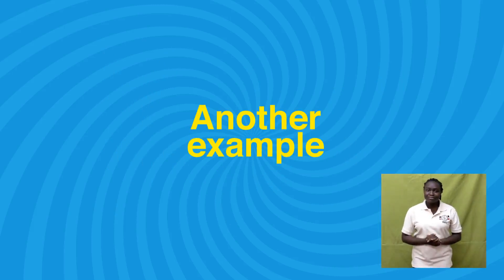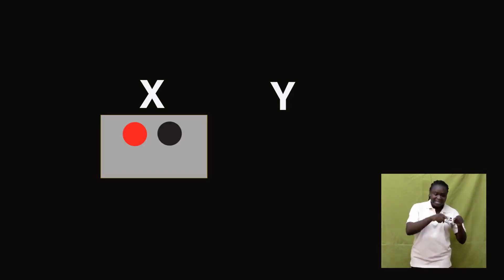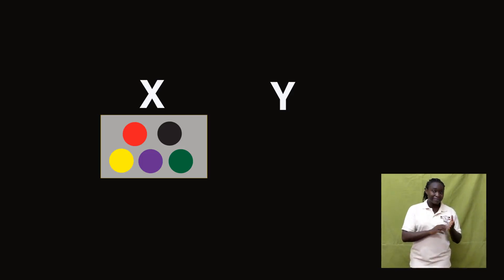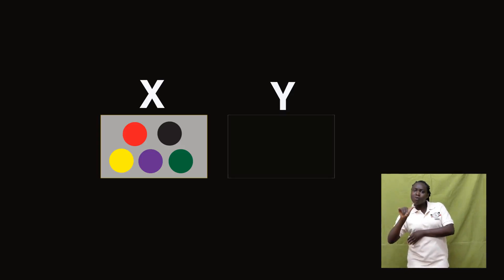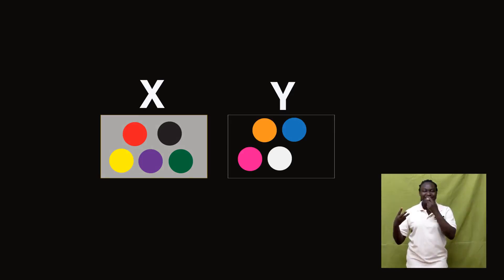Here is another example. I will name the sets X and Y. Set X equals red, black, yellow, purple, green. And set Y equals orange, blue, pink, white, and brown. I have used colors.